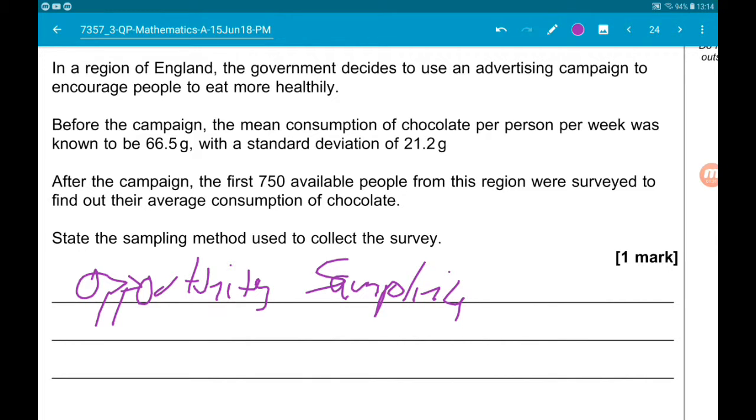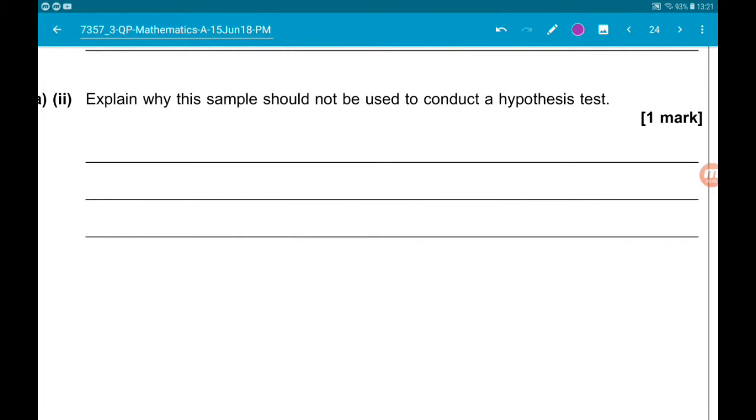Part two asks us to explain why the sample would be inappropriate to conduct a hypothesis test on. So I would say there's two things here. First thing I would say is 750 is an incredibly small sample for a whole region of England. In the mark scheme though, their reason is that the sample is not random. So they've just sampled the first 750 people that they ran into, so it's not a random sample.